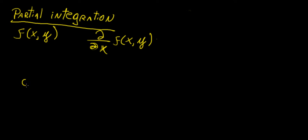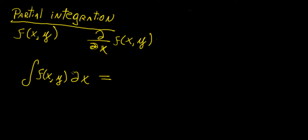But what happens if we want to integrate some function of several variables with respect to a single variable? Because this has to be essentially the opposite of that. If we want to integrate a function with respect to x — what we call the partial integration of the function — we would expect to get another function of x and y, but we treat y as a constant, since the only variable we're integrating with respect to is x.